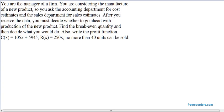Find the break-even quantity and then decide what you would do. Also, write the profit function. We're given the cost estimates from the accounting department. We're told the cost is 105x plus 59.45. And the sales department, based on their sales estimates, tells us the revenue will be 250x. We're also told by the sales department that they don't believe they can sell more than 40 units of this new product.